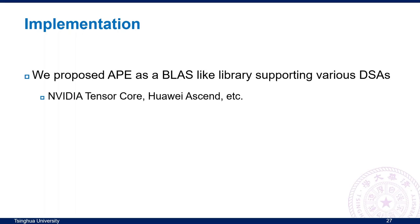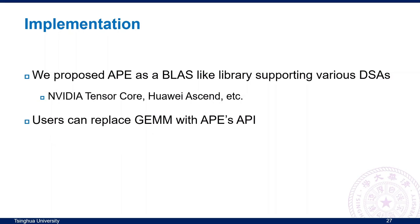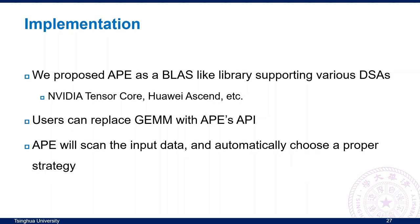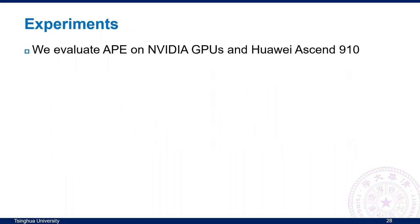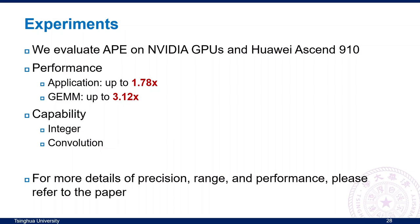Combining the above contributions, we propose APE, implemented as a BLAS-like library supporting various DSAs, including NVIDIA Tensor Core and Huawei Ascend. Users can replace their GEMM API with APE's API. APE will scan the input data and automatically choose a proper strategy. For more details on precision, range, and performance, please refer to the paper.